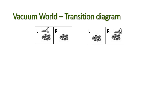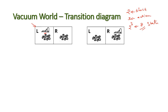Now let us draw the transition diagram for the vacuum world problem. We have two blocks and three actions, so the total possible states are 2 to the power of 3, giving eight states. Let us take this as our initial state: the vacuum cleaner is in the left block, the left block is dirty, and the right block is also dirty.